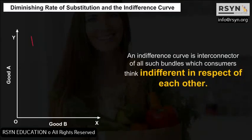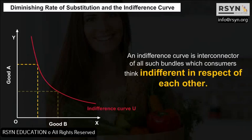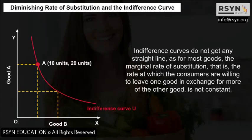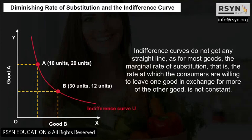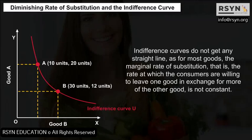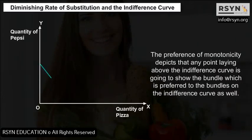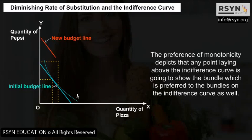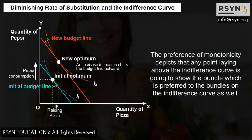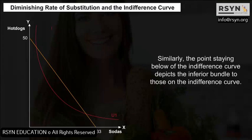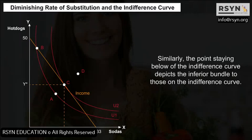An indifference curve is the locus of all such bundles which the consumer thinks are indifferent with respect to each other. Indifference curves are not straight lines, as for most goods the marginal rate of substitution — the rate at which consumers are willing to give up one good for more of the other — is not constant. The monotonicity of preferences implies that any point lying above the indifference curve shows a bundle preferred to those on the indifference curve, while a point below it depicts an inferior bundle.